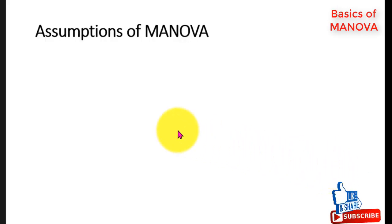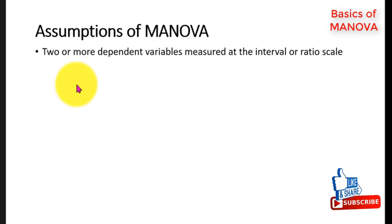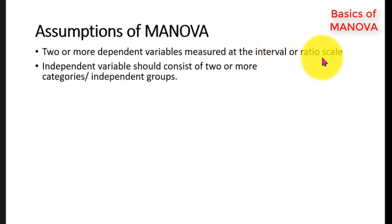There are certain assumptions of MANOVA which must be satisfied before performing MANOVA. First, two or more dependent variables must be measured at the interval or ratio scale. Second, independent variables should consist of two or more categories or independent groups.